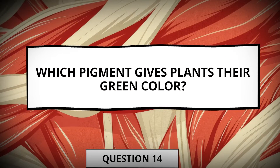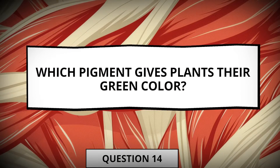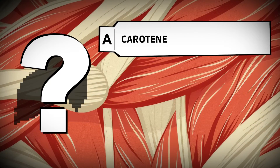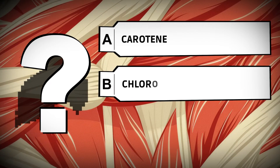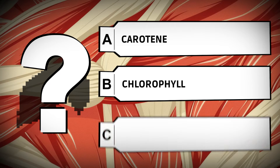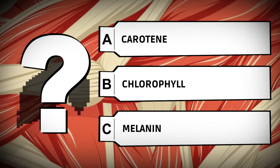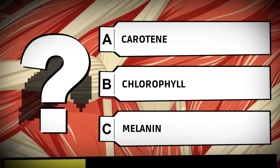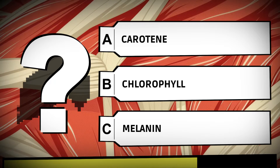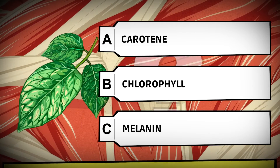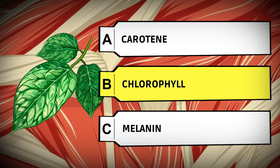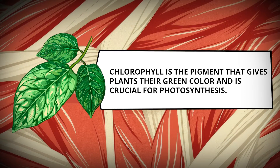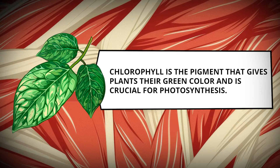Which pigment gives plants their green color? Carotene. Chlorophyll. Melanin. Chlorophyll is the pigment that gives plants their green color and is crucial for photosynthesis.